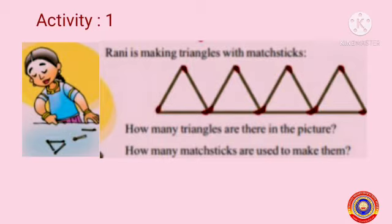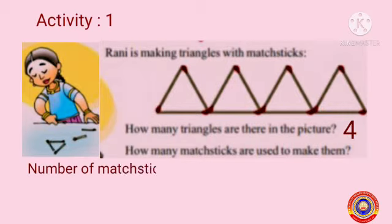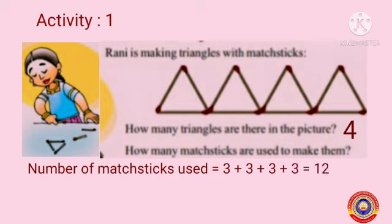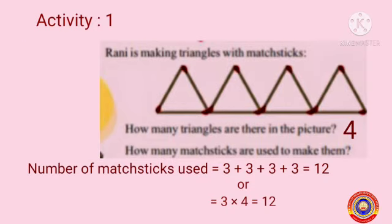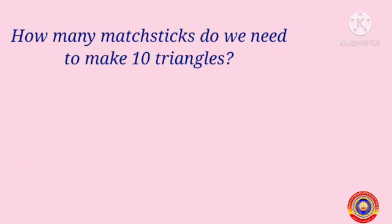Activity number one: Rani is making triangles with matchsticks. Look here — how many triangles are there in the picture? There are four triangles. How many matchsticks are used to make them? The number of matchsticks used is equal to 3 + 3 + 3 + 3, that is equal to 12. Or we can also find it by multiplying 3 into 4, which is equal to 12.